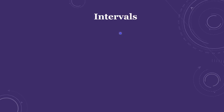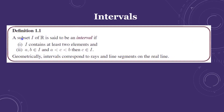Intervals: a subset I of R, the set of real numbers, is said to be an interval if for any two numbers a and b belonging to I, and for any number c such that a less than c less than b, the element c must also lie in I. That is, c belongs to I.